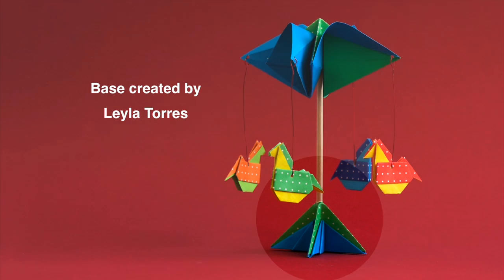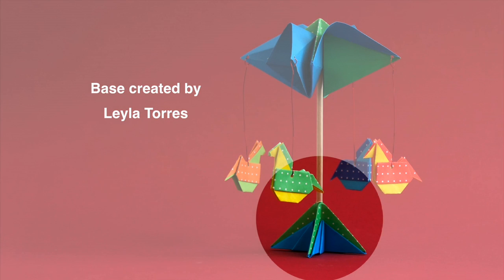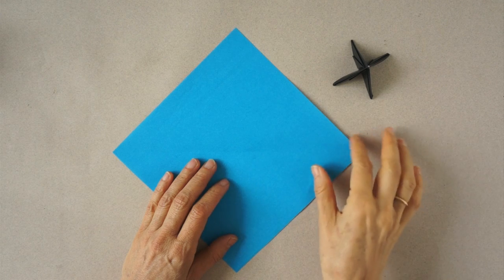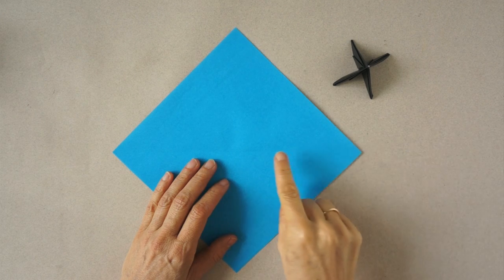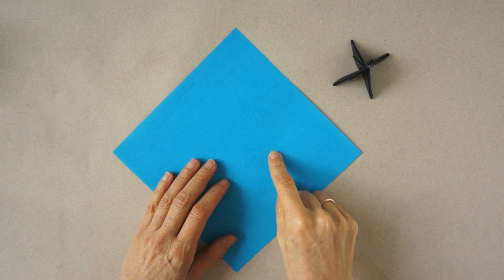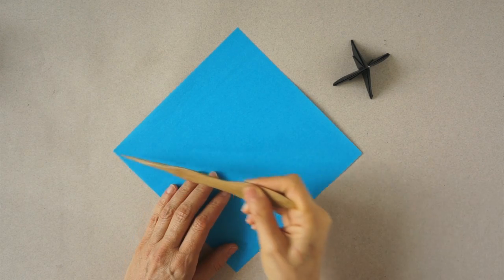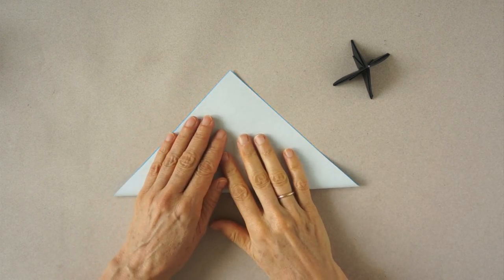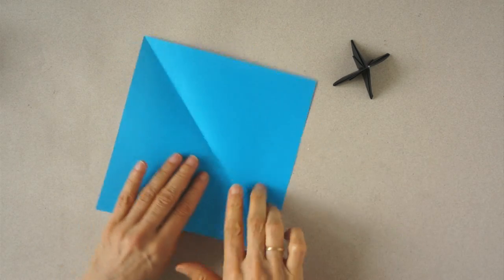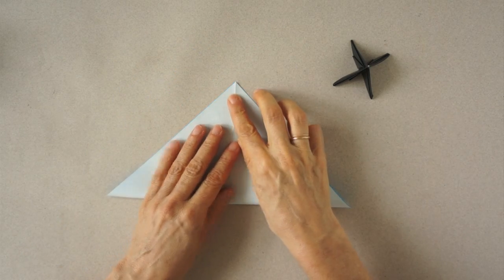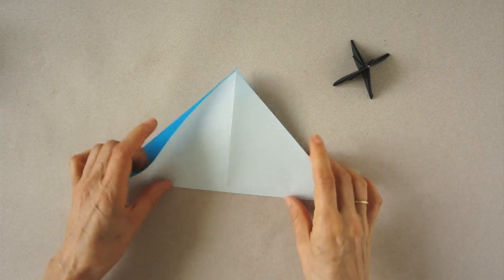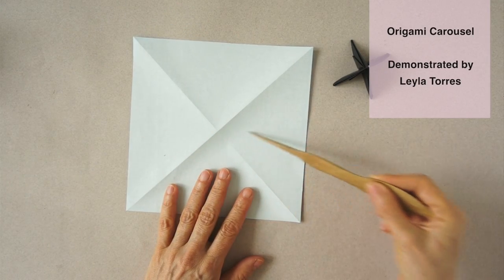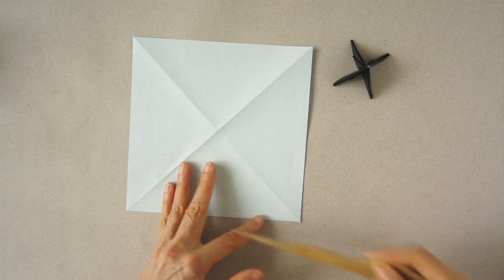Here I will explain how to make the base. If we have paper of different color on each side, we begin with the final color of the base facing up. We make the diagonal folds. Turn it over. We make the center folds parallel to the edges.